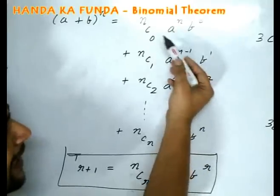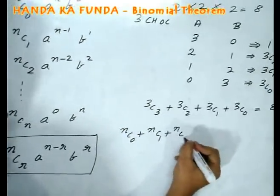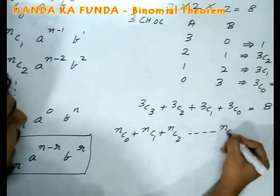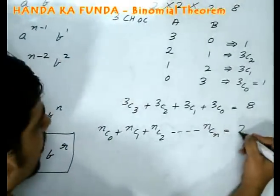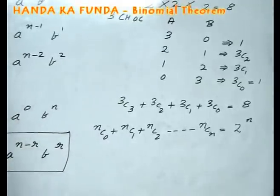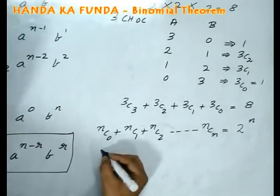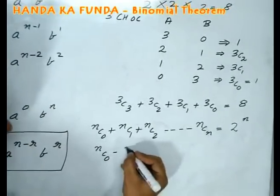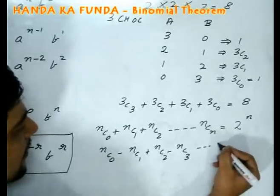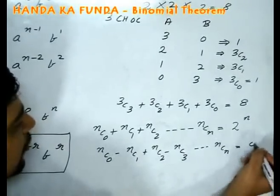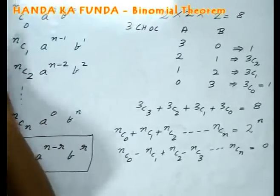On the right hand side, I will have nC0 plus nC1 plus nC2 till nCn and that will effectively be 1 plus 1 to the power of n or 2 to the power of n. There are couple of other things that you should know which you can obtain by putting values in the formula: nC0 minus nC1 plus nC2 minus nC3 till nCn will be 0. This can be obtained by putting a as plus 1 and b as minus 1.